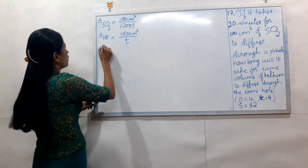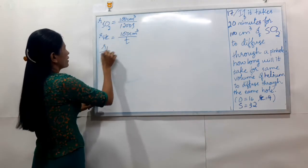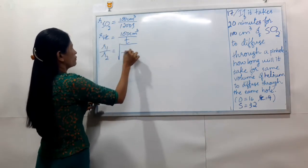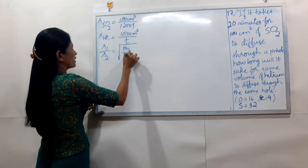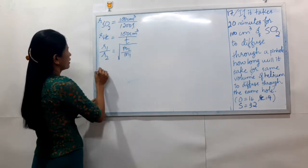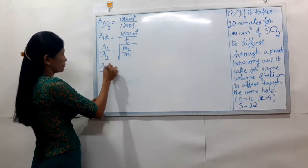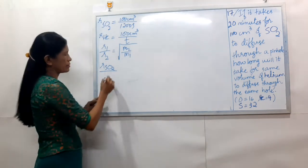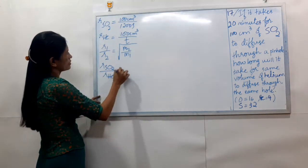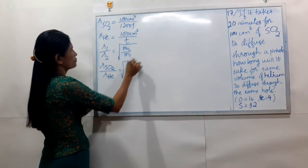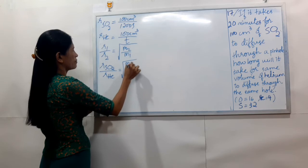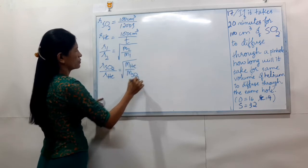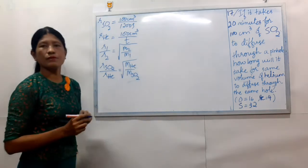R2 equals the square root of M2 by M1. R1 is RSO2, R2 is R-helium. The square root of M2 is RSO2, MHE, M1 is RSO2.